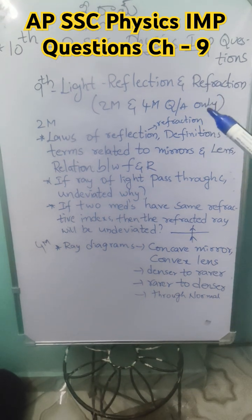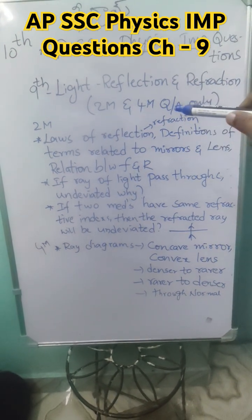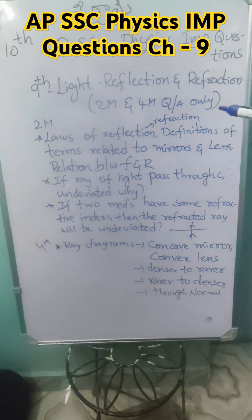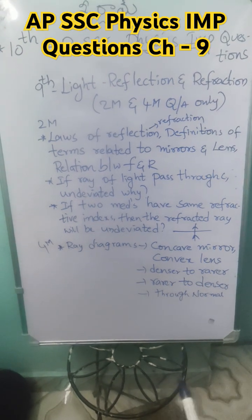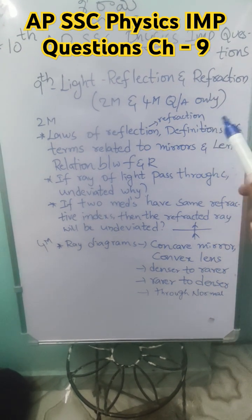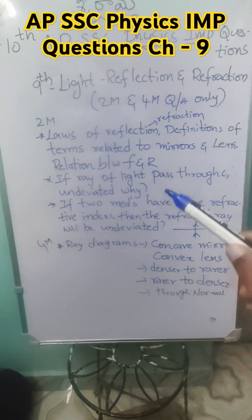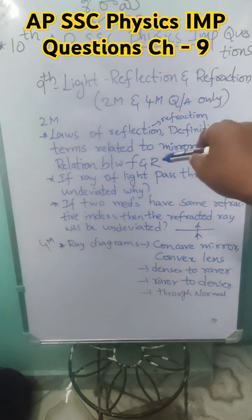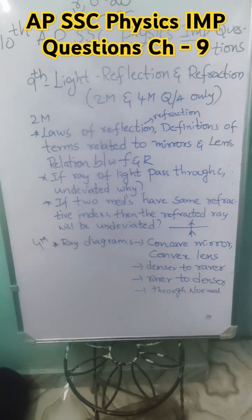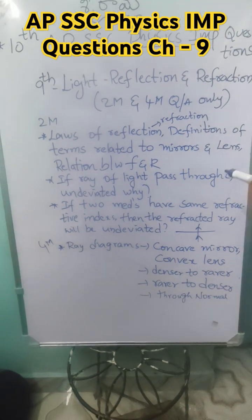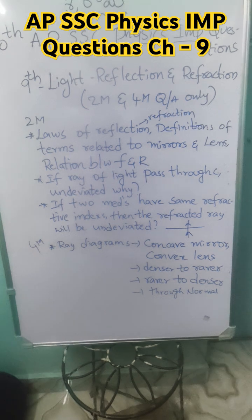For the two marks, the important topics are: laws of reflection, refraction definitions, what is pole, what is center of curvature — topics related to mirrors as well as lenses. One most important thing is the relation between the focal length and the radius of curvature. These are the two questions which were asked from the previous grand test paper.